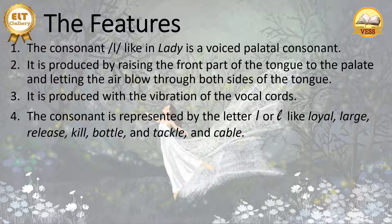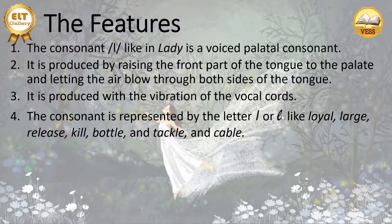The consonant is represented by the letter L. We have L here — this is repeated because one form looks like 'I', so another representation of the consonant is also given. Examples include: loyal, large, release, kill, bottle, tackle, cable.